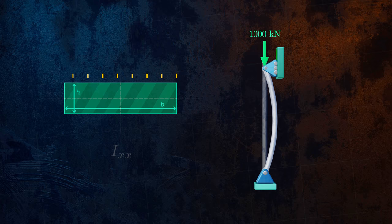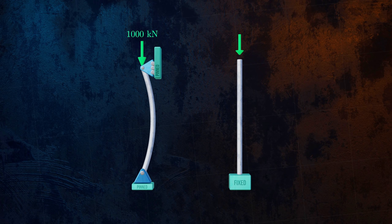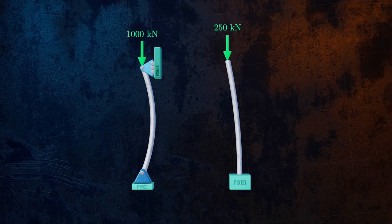If the end conditions change so that the column is fixed at one end and free at the other, it will clearly only be able to support a much smaller load before buckling, and the buckled shape is different. We can easily modify Euler's formula to account for different end conditions by introducing the concept of an effective length. The effective length can be defined as the distance between inflection points on the deflected shape.